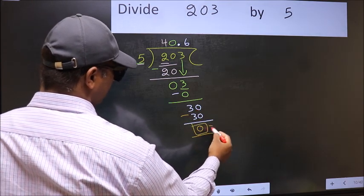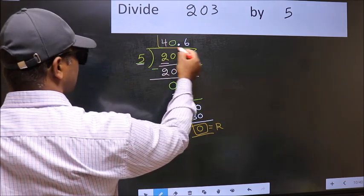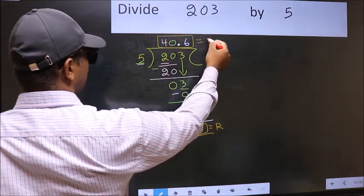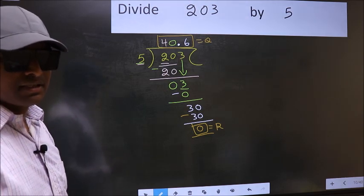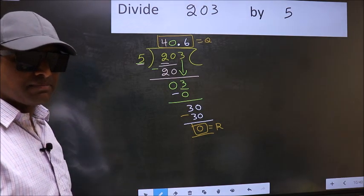So this is our remainder and this is our quotient. Did you understand where the mistake happens? You should not make that mistake.